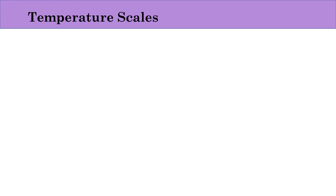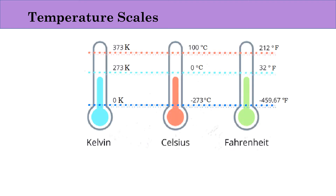In order to find the heat in a substance, we need to measure the temperature of that substance. Temperature can be measured by many scales. Mainly there are three scales which we use: Kelvin scale, Celsius scale, and Fahrenheit scale.